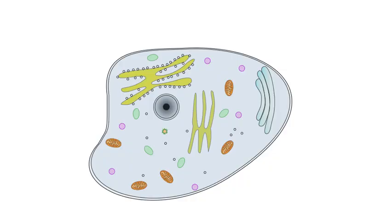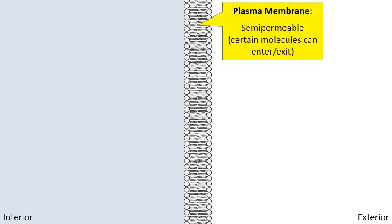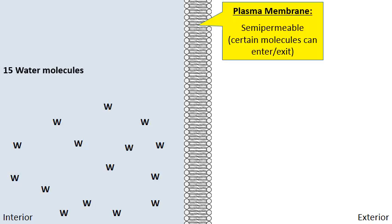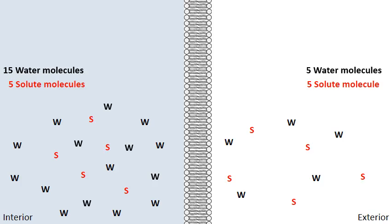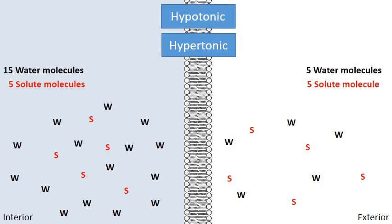Here is our cell again. Let's zoom into the cell membrane — the plasma membrane — which is semipermeable. Let me add 15 water molecules and 5 solute molecules inside the cell. On the outside, let me add 5 water molecules and 5 solute molecules. Now, where do the hypotonic and hypertonic labels go — left or right?